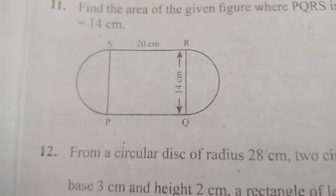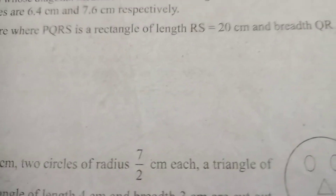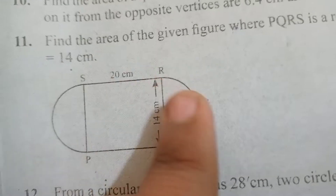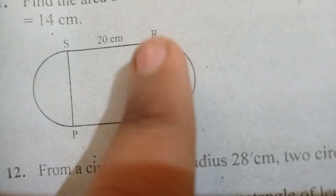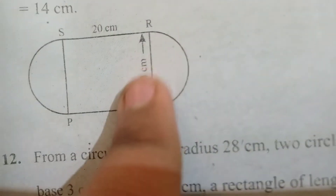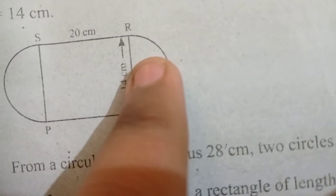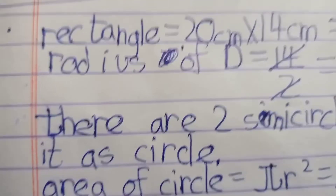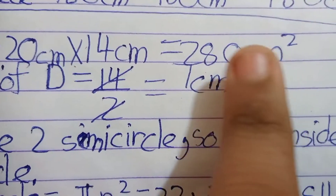Next: find the area of the given figure, which is a composite shape — a rectangle with length 20 cm and breadth 14 cm, with a semicircle on the left side and a semicircle on the right side. We will first find the area of the rectangle, then find the area of the semicircles. Since there are two semicircles, together they form one complete circle.